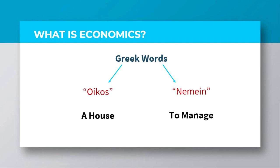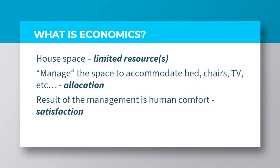Economics originated from two Greek words: oikos, which means a house, and nemen, which also means to manage. Putting these Greek words together simply means to manage a house. We will liken the space in the house, which you need to manage, as the resource, which is assumed to be limited. Thus, you need to manage this space so that you can possibly arrange every piece of furniture or item in the room. Therefore, in economics, we use the word allocation for that.